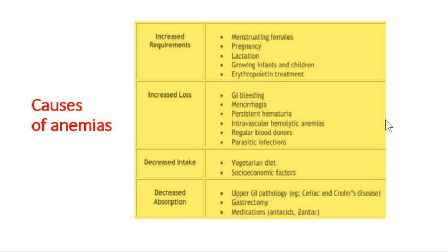Third is decreased intake. Socioeconomic factors are very important — when people cannot afford adequate nutrition, intake is less. Vegetarian diet is also noted here because vegetarians have less protein intake compared to non-vegetarians; plant-based proteins like dal have very low availability and family distribution, leading to very low protein intake.